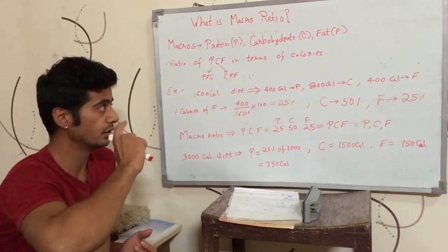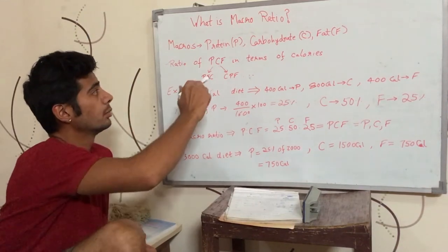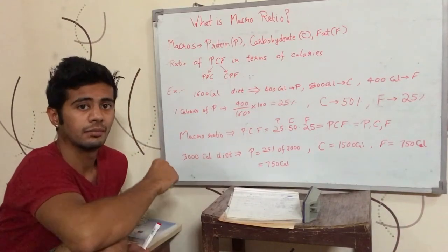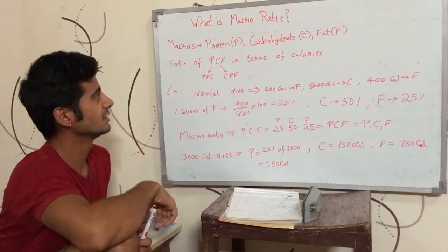I have talked about this in a previous video. The macro ratio refers to the ratio of protein, carbohydrates, and fats in our diet.